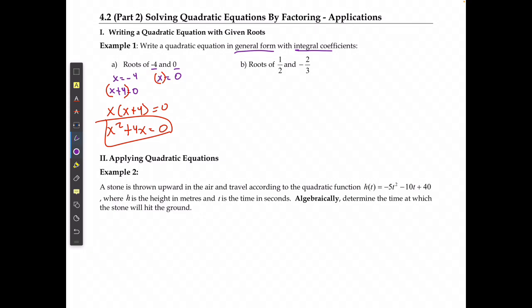In the second case, I would start by saying x is equal to 1 over 2, or x is equal to negative 2 over 3. I need to get rid of the fraction, so I'm going to multiply both sides by the denominator here, multiply both sides of this equation by 2. I'm going to say that 2x is equal to 1,